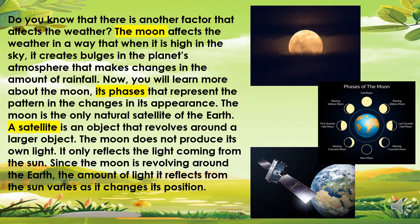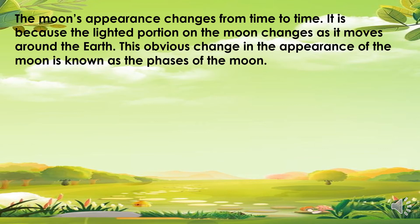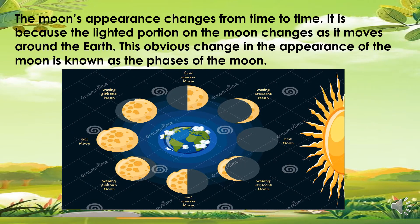A satellite is an object that revolves around a larger object. The moon does not produce its own light — it only reflects the light coming from the sun. Since the moon is revolving around the Earth, the amount of light it reflects from the sun varies as it changes its position. The moon's appearance changes from time to time because the lighted portion of the moon changes as it moves around the Earth. This obvious change in the appearance of the moon is known as the phases of the moon.